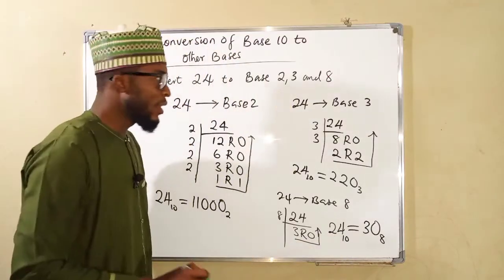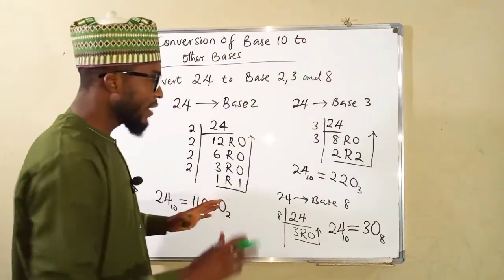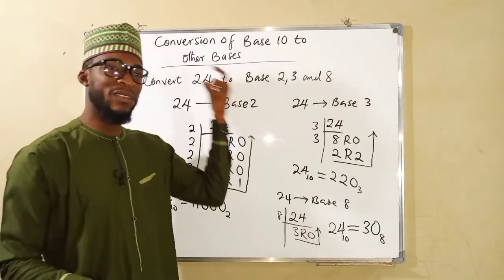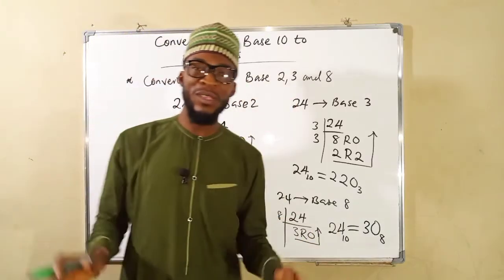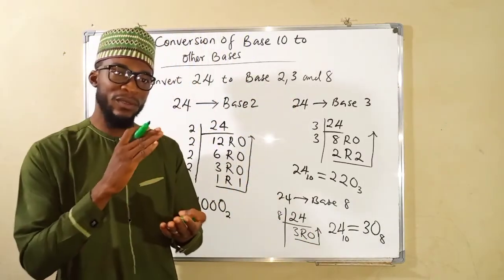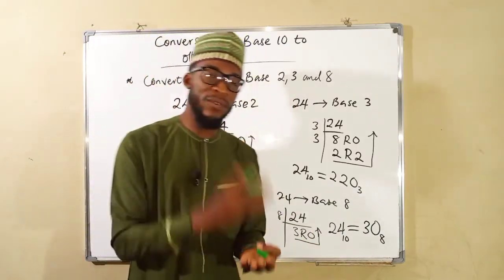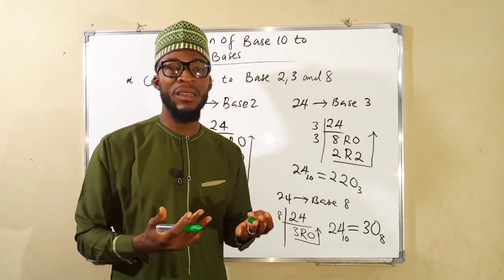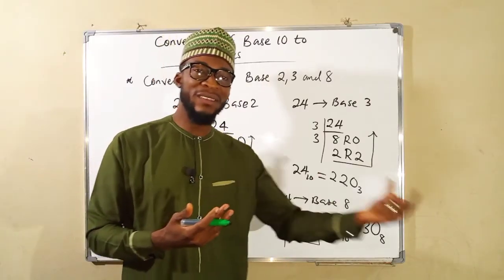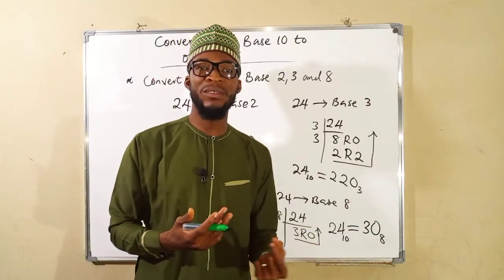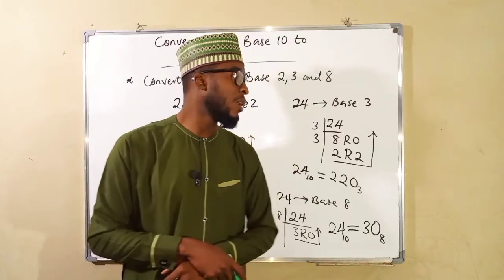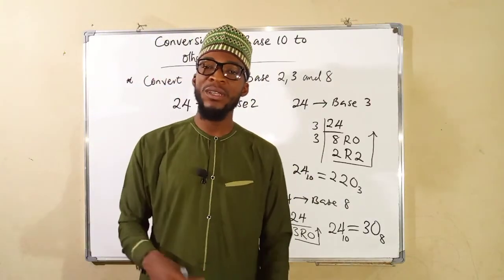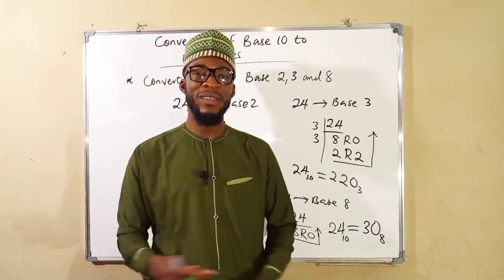So this is exactly how to convert numbers from base 10 to other bases — you perform a successive division of that number in base 10 with the assigned base you are heading to. This is all I have for you today. Thank you for watching, do have a nice day.